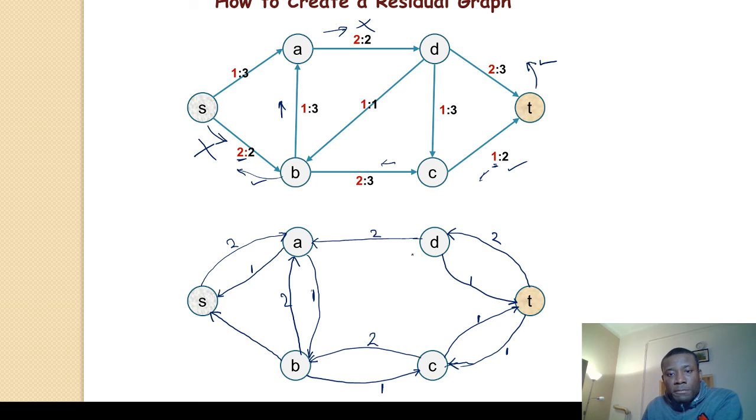We're left with D to C and also D to T. D to C we have 1. We can remove it by putting a backward edge of 1. We need 2 more to get to the capacity of this edge of 3. So we add 2 more in the same direction.